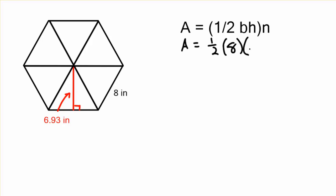Base is going to be 8 inches. The height is 6.93 inches. And n is just going to be how many little triangles there are, the number of sides that go around that hexagon. That's six sides. So now we just multiply everything together.